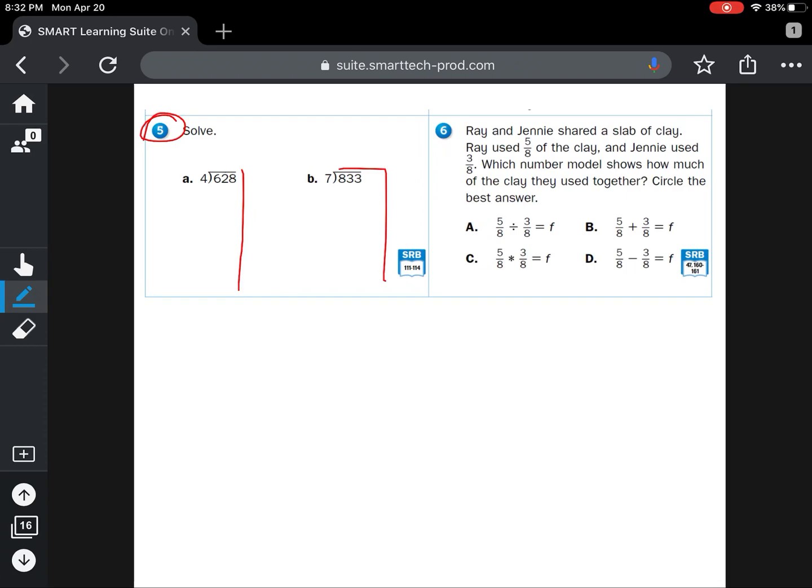What I'm going to do is review number 5A with you, then you're going to do 5B on your own. Since it's so little on my screen, I'm going to write down here in the white space. So we have 628 divided by 4.